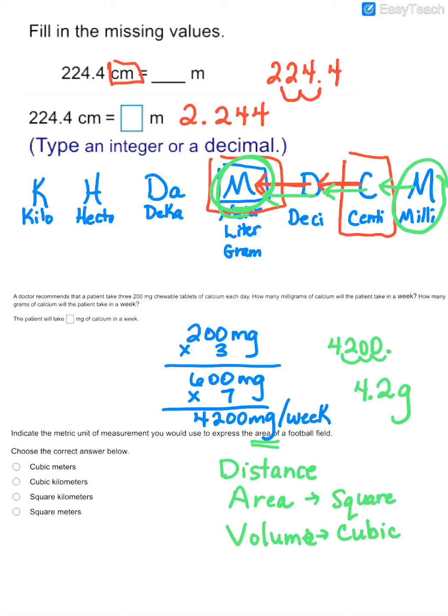And so when we're comparing the metric system to our system, anytime you think about kilometers, you need to think about things you would measure in miles. Whereas if you think about meters, you need to think about anything that you would measure in feet or yards. And as we know with a football field, it's typically measured in yards. So the answer that would best be used in this case would be square meters.